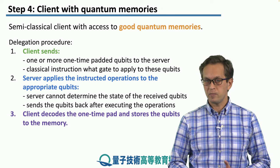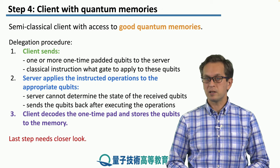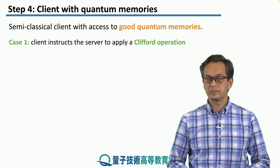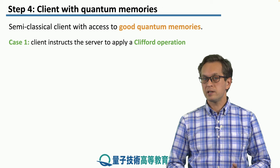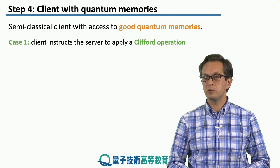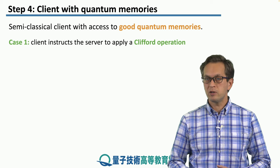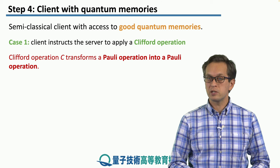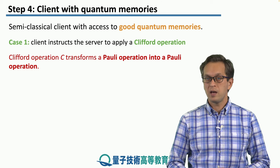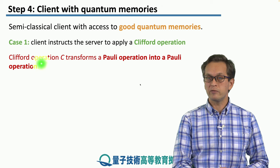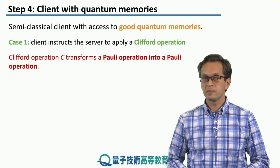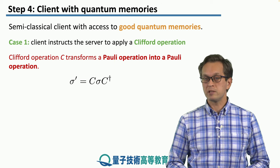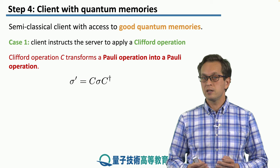It sounds simple, but it's the last step that is quite problematic, so we're going to examine it a little further. Let's say we consider the first case where the client instructs the server to apply a Clifford operation. A Clifford operation is a particular type of operation that transforms Pauli operations into other Pauli operations, and we denote the Clifford operation with a C.